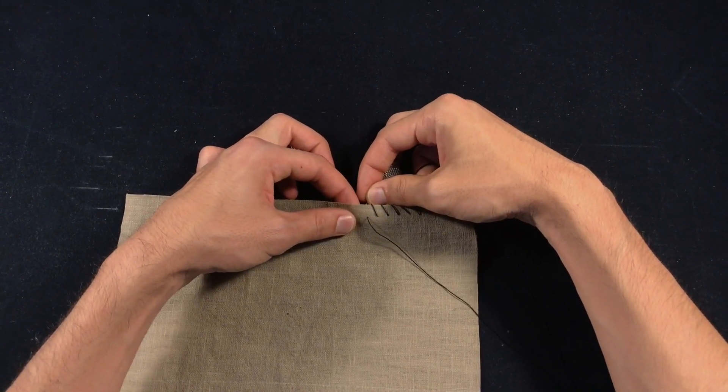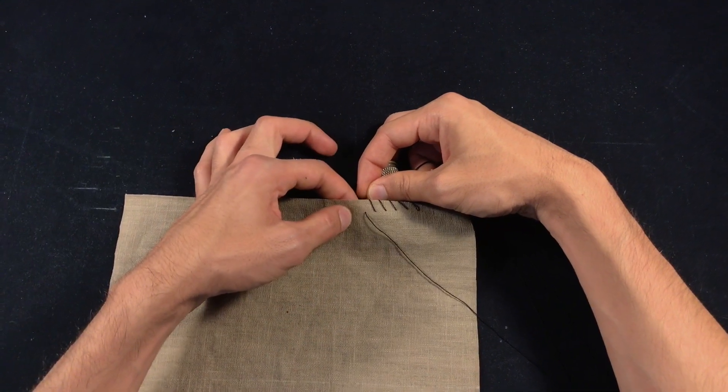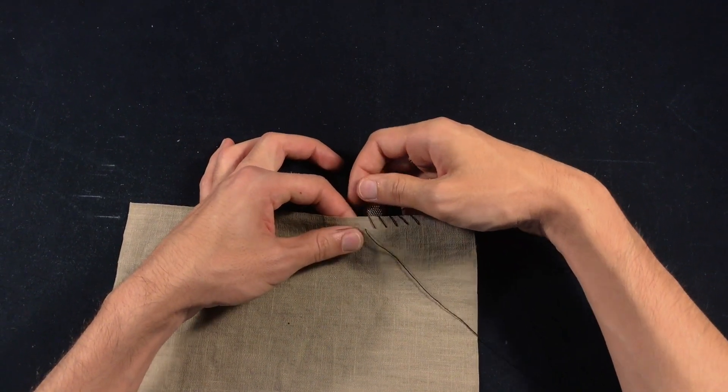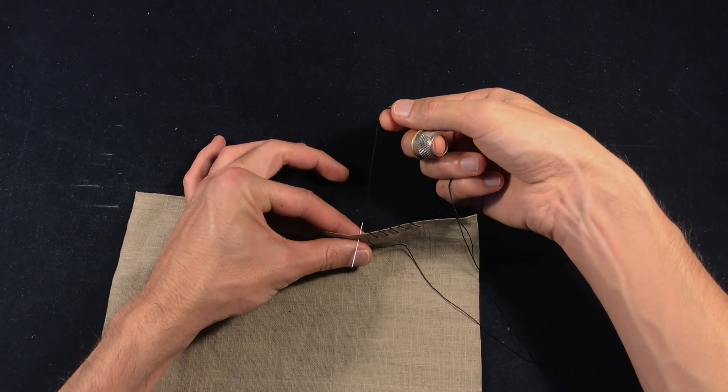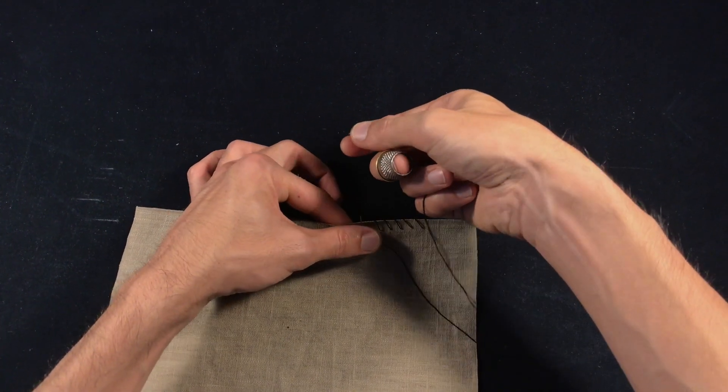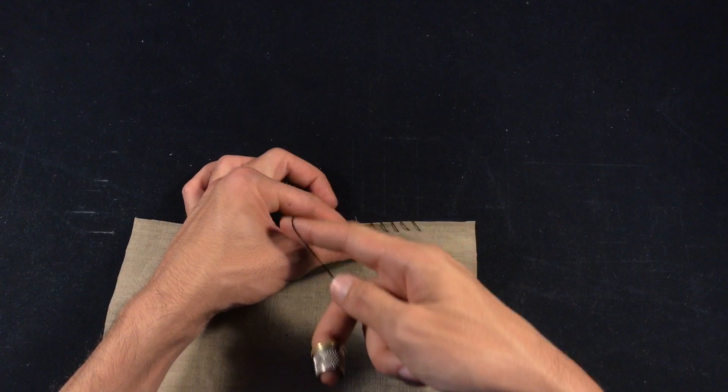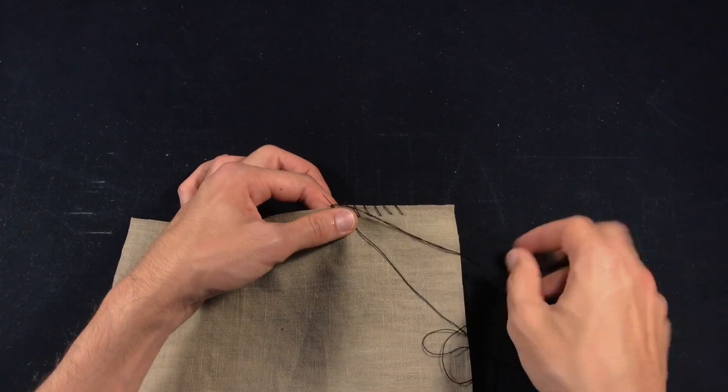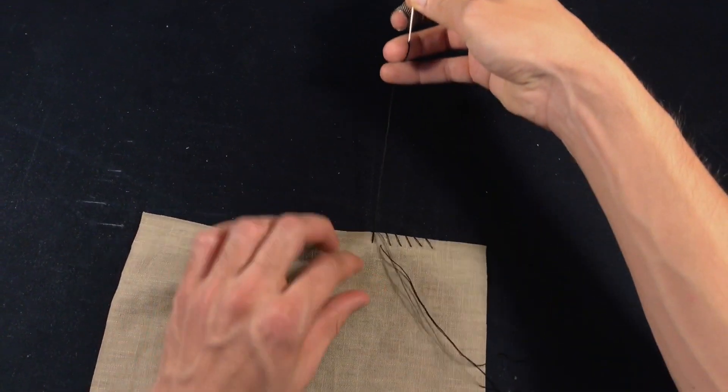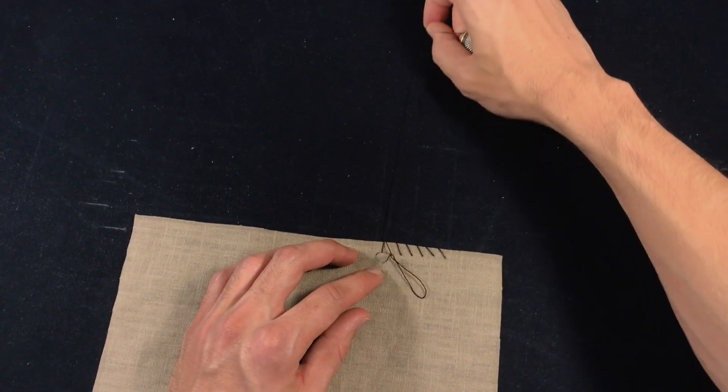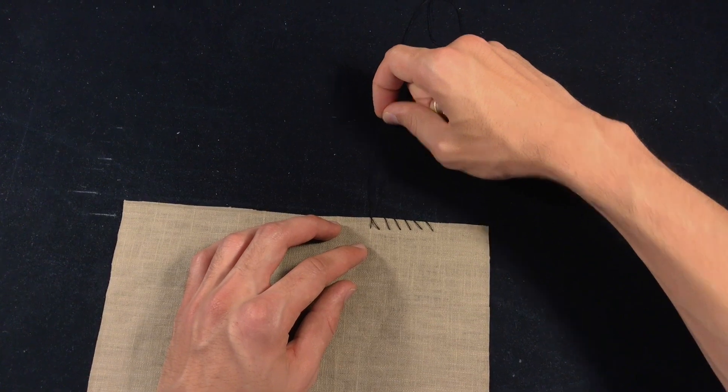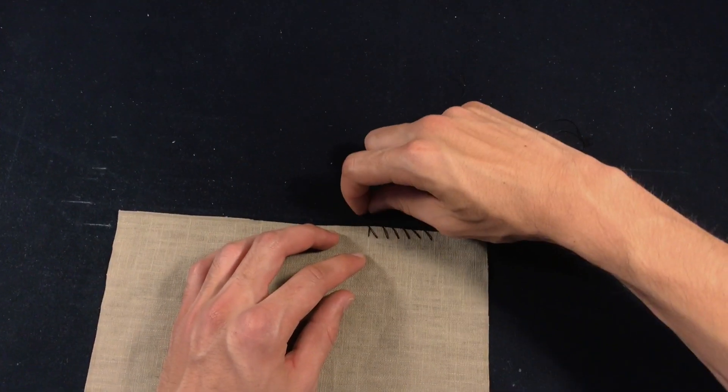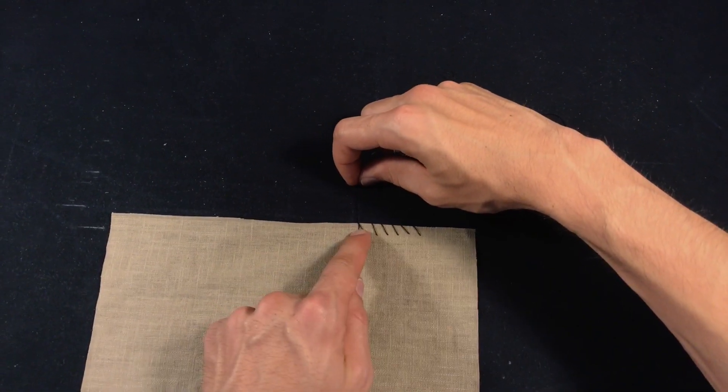You go forward to where your stitch came out and you're going to take both of the threads that are coming out of the eye of the needle and wrap them counterclockwise over the needle, then pull toward the direction of the edge. Don't pull it up or sideways, just pull it straight 90 degrees to the raw edge.